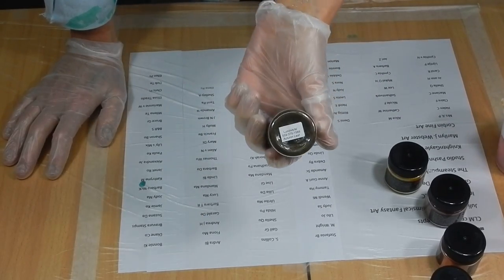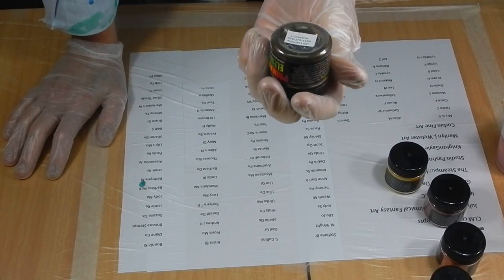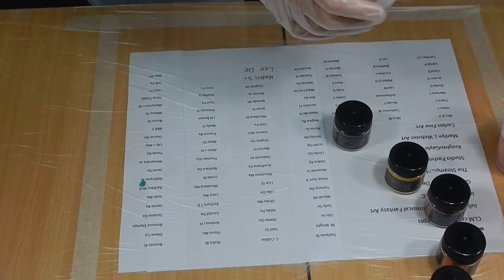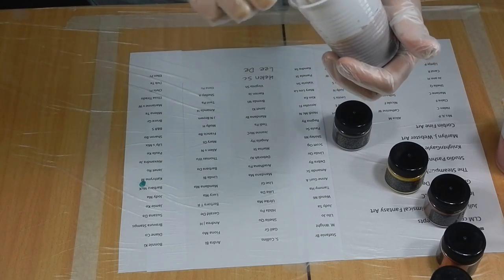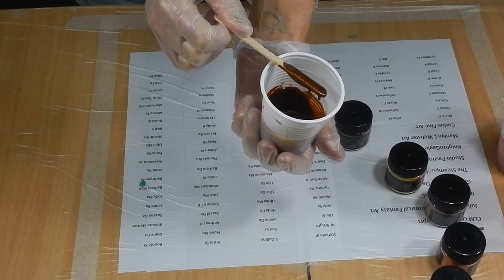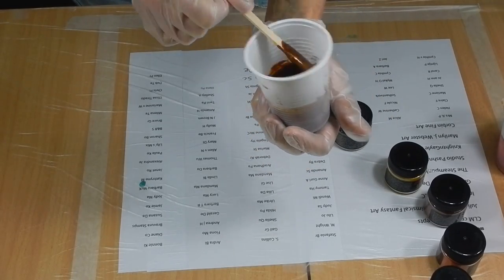We have autumn leaf. Autumn leaf looks kind of a funny color in the little jar but once you start mixing it up then you get these most beautiful, look at that. Is that beautiful? When the light hits it, it is gorgeous.